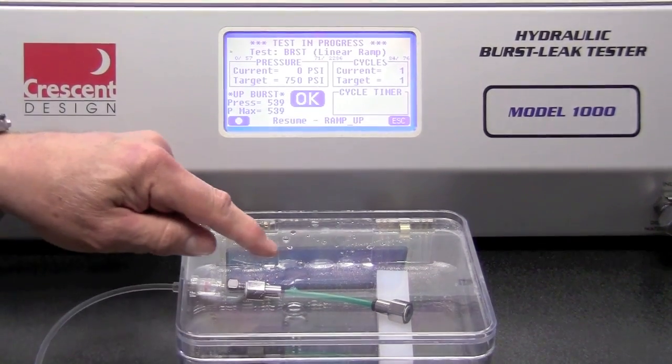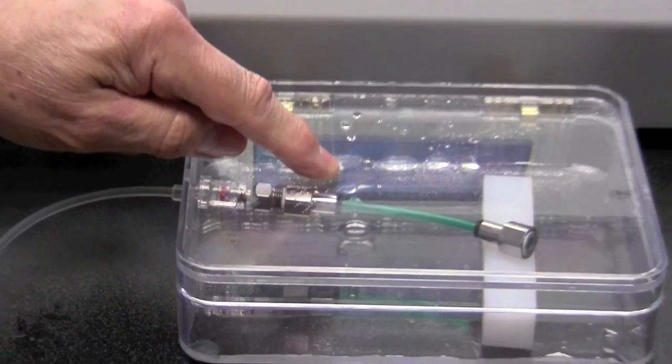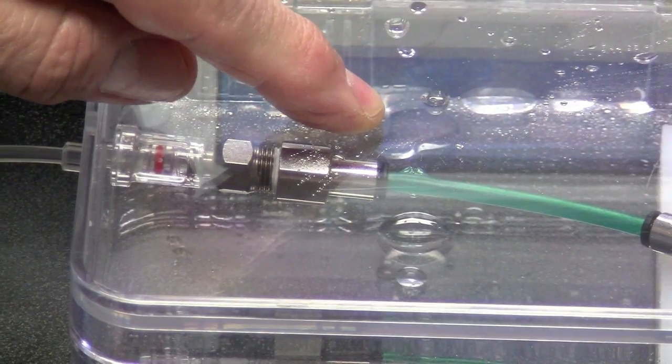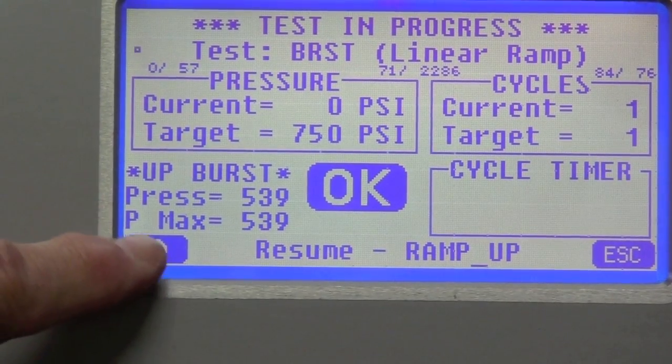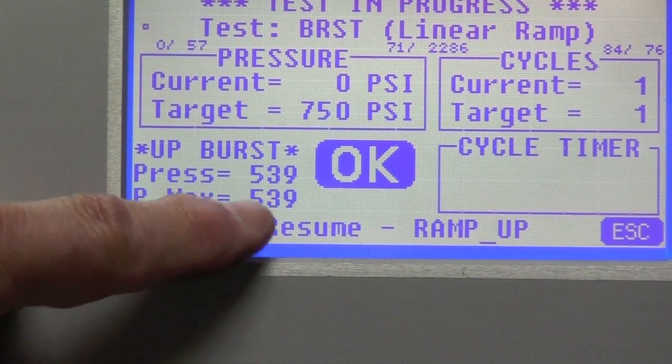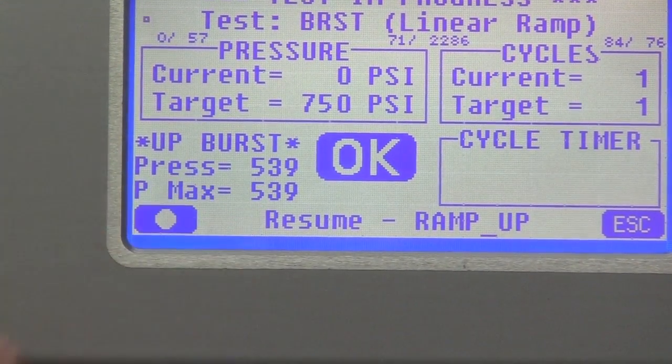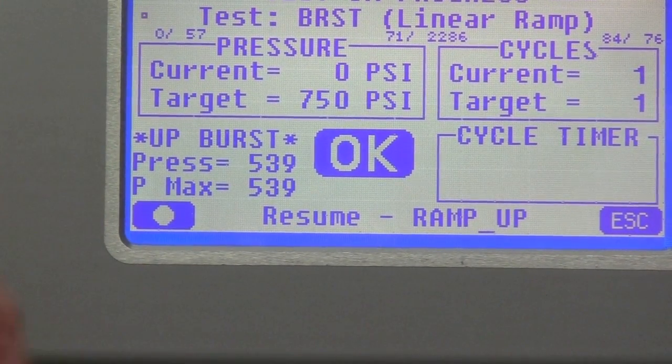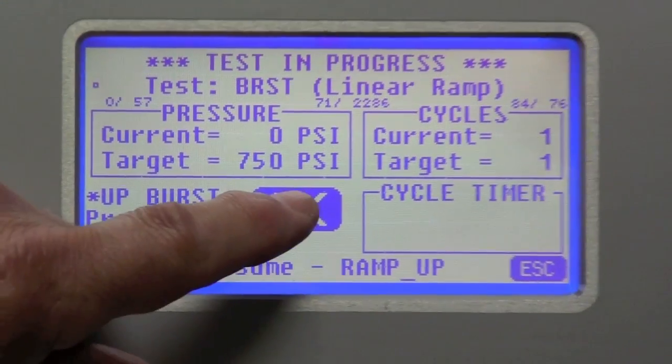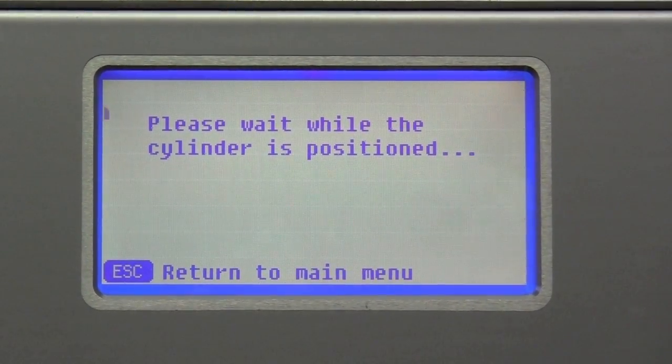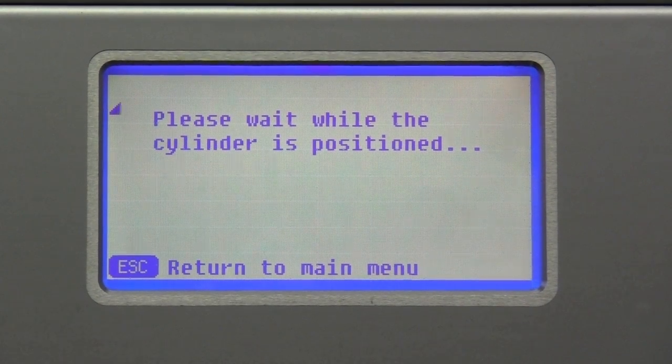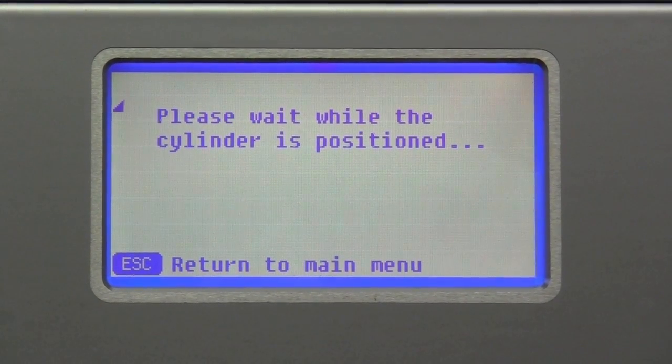So you notice that the tubing has ruptured at this end and the up burst pressure was 539 PSI. If I wanted to continue testing additional products, I would simply hit OK. And the machine will reset itself in anticipation of running another test.